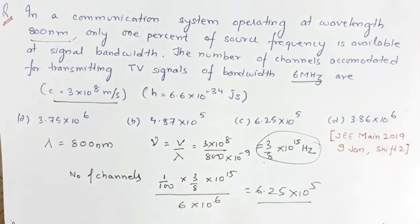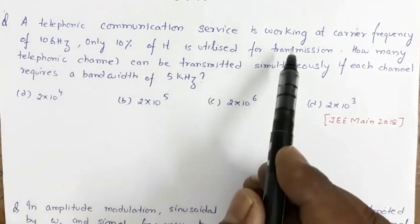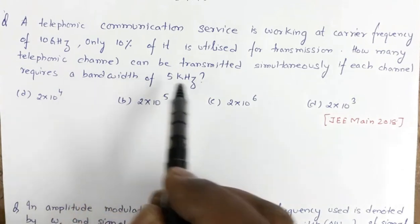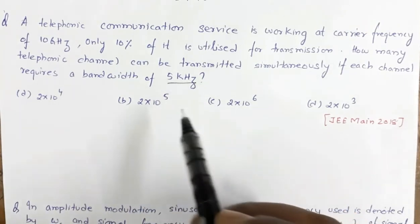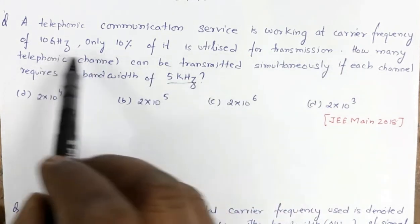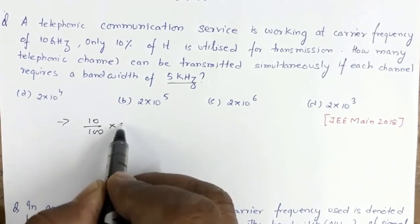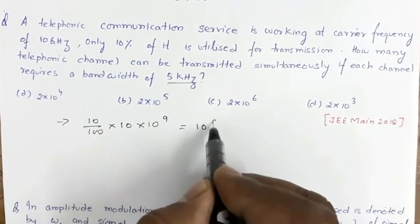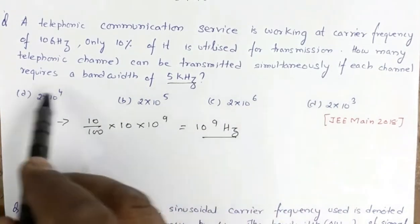This next question is from JEE 2018. A telephonic communication service is working at a carrier frequency of 10 GHz. Only 10 percent of it is utilized for transmission. How many telephonic channels can be transmitted simultaneously if each channel requires a bandwidth of 5 kHz? This is similar to the previous problem. Ten percent of the carrier frequency is available, that is 10/100 × 10×10⁹ = 10⁹ Hz.